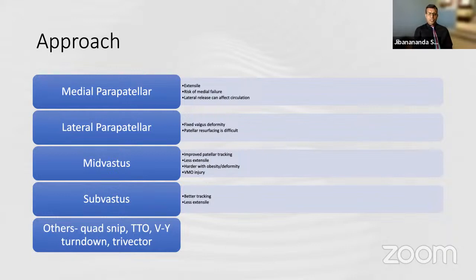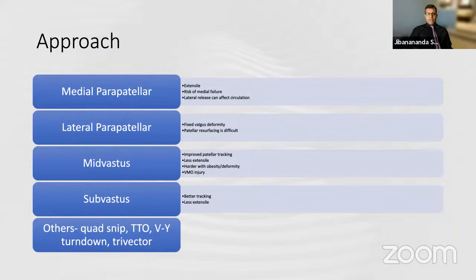Lateral parapatellar is used specifically for fixed valgus deformity; it helps with lateral release but patellar surfacing can be very difficult. Mid-vastus is quite helpful to improve patellar tracking, but it is less extensile and difficult in obese patients or severe deformity, with questionable VMO injury on EMG studies. Subvastus is significantly quadriceps-sparing and improves tracking, but is also less extensile. Additional tools include a quad-snip, tibial tubercle osteotomy, V-Y turndown, or tri-vector approach for more difficult cases.